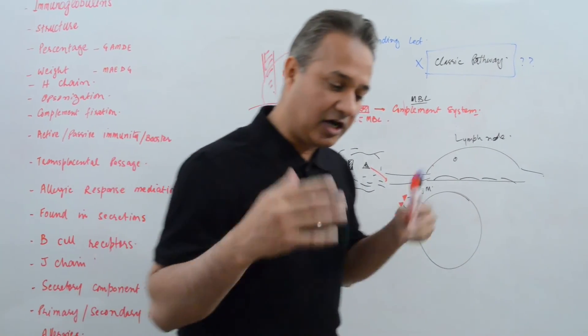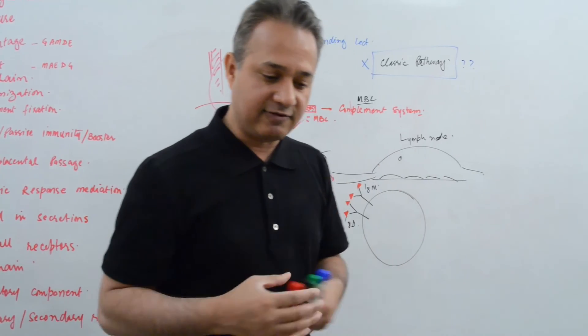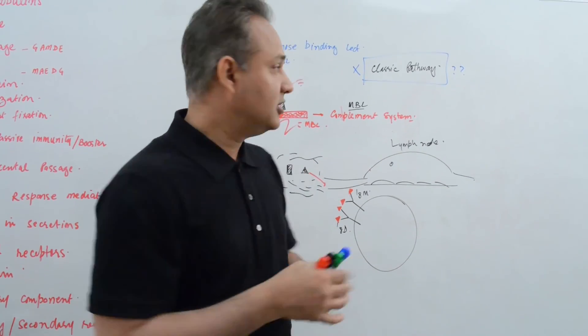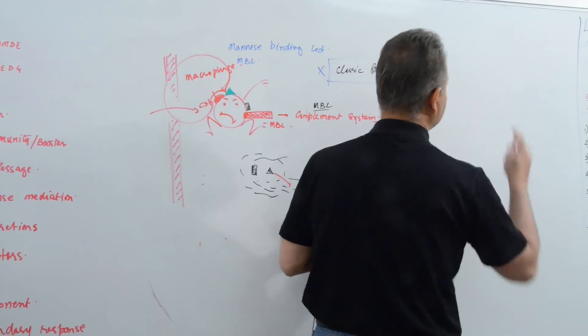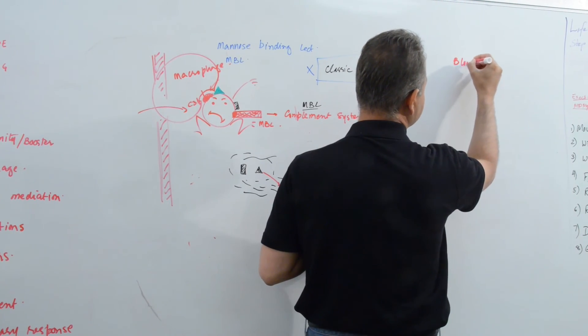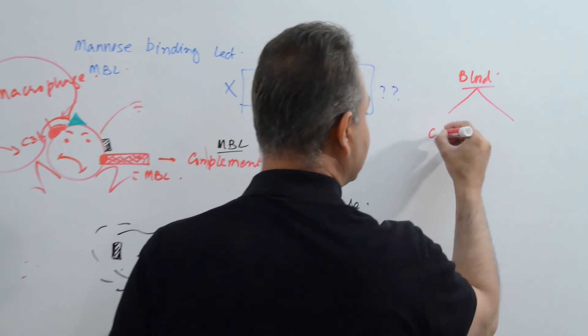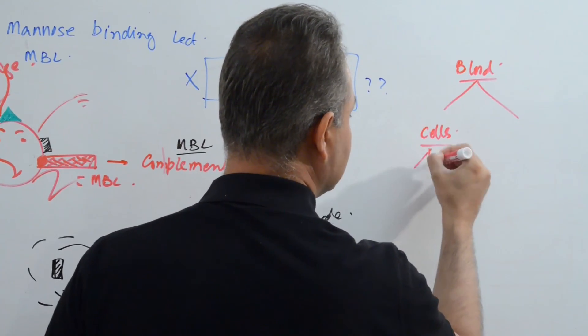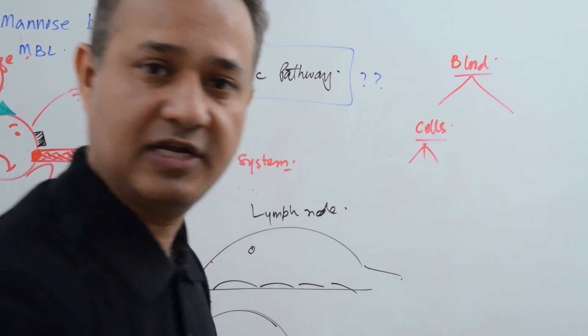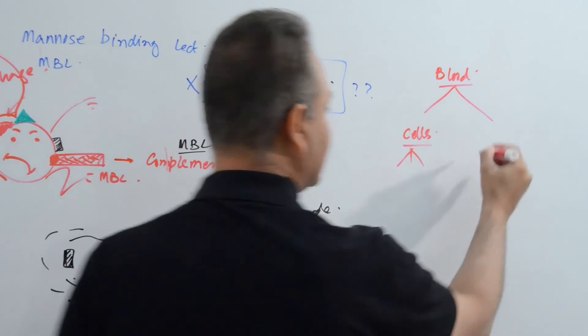So the first thing, what are immunoglobulins? Where are these found? What are their types? So first, let's do this. We have blood, of course. Blood has two primary components. It has cells. And you know that cells, there are white blood cells and red blood cells and platelets and so on. Then it has plasma.